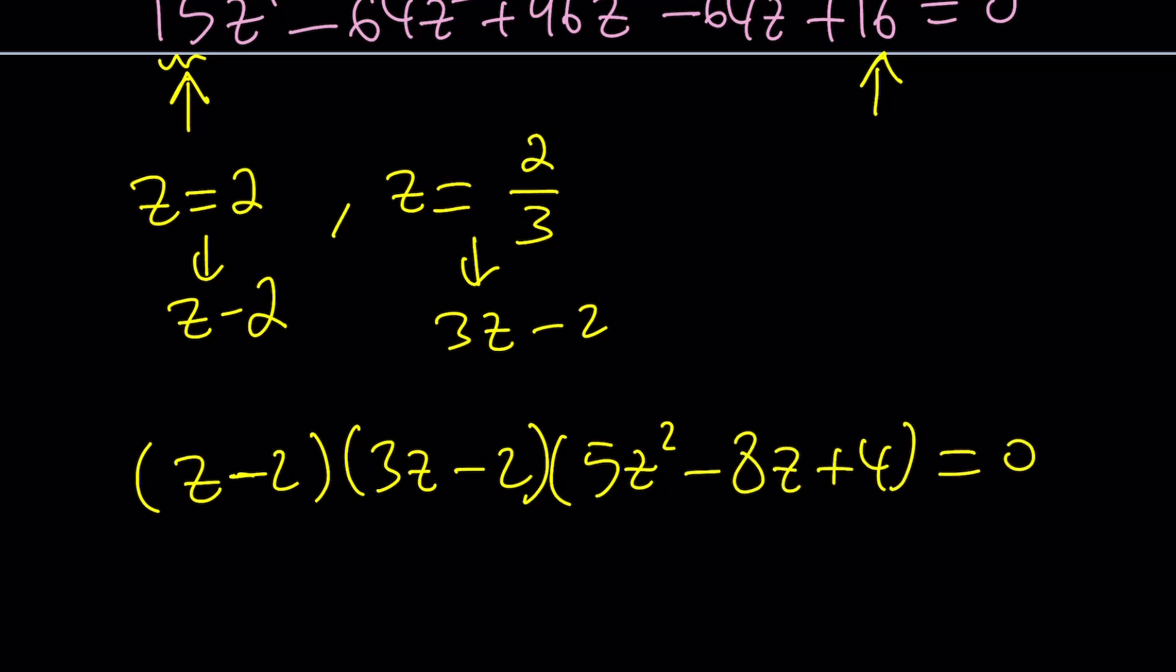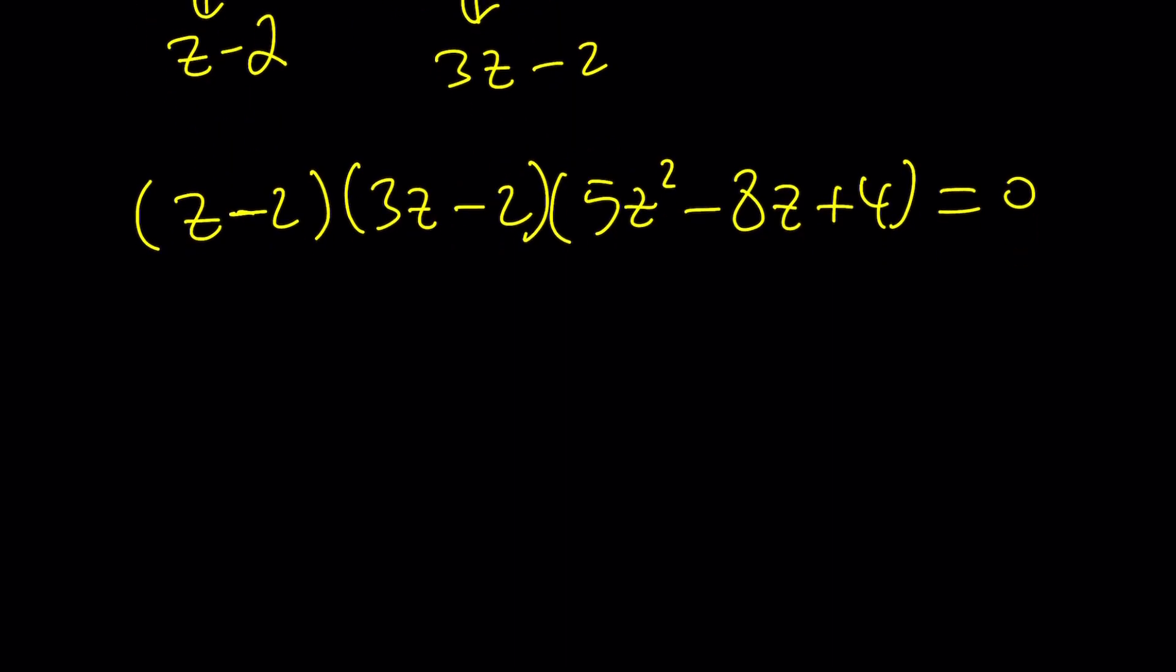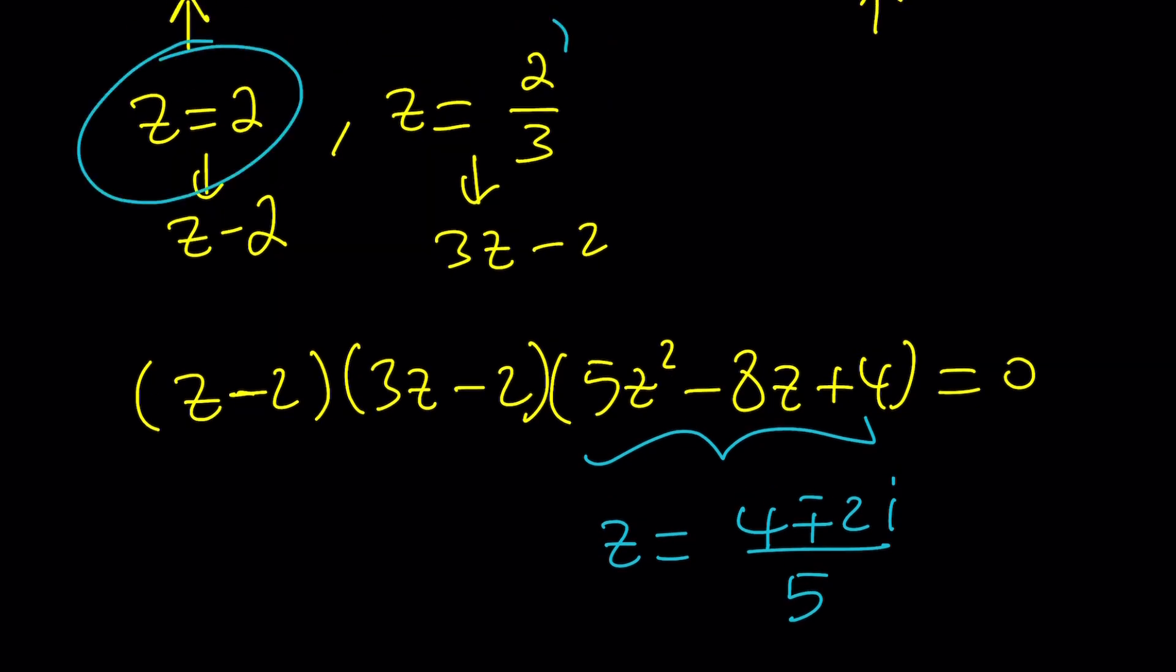Now we ended up with a quadratic which is not easily factorable, but if you look at the roots of this quadratic, which is easy to find by the quadratic formula, you're going to find Z equals 4 plus minus 2i divided by 5. If you use the quadratic formula that's what you're going to get. And from here you already know, Z equals 2 is a solution, and Z equals 2 thirds is a solution.